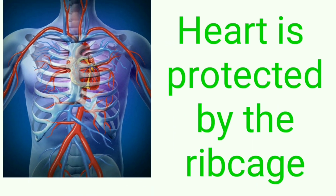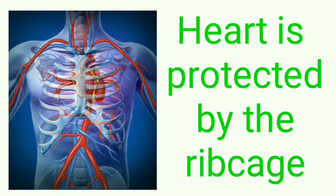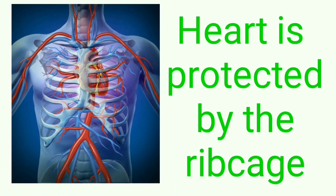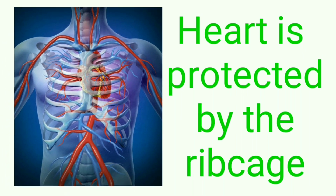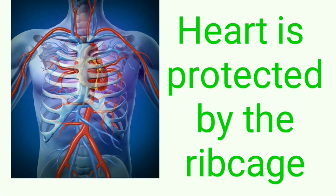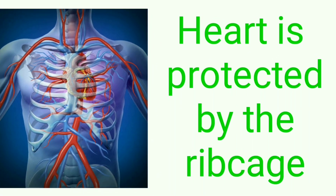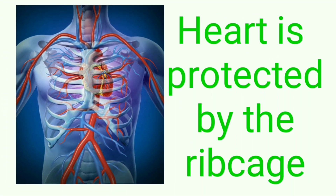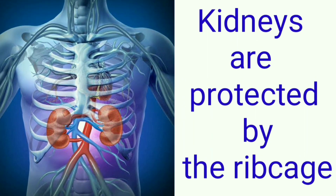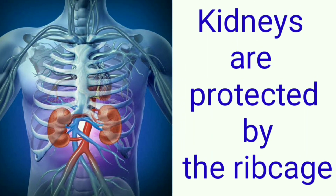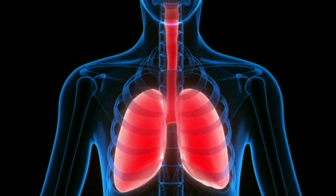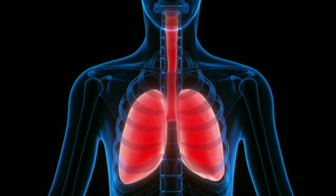As you can see on your screen, the heart is covered by the rib cage from all sides — meaning the rib cage provides protection to the heart. In another image, you can see the kidney is also protected by the rib cage. The next image shows the rib cage also protects our lungs, which play a vital role in respiration.